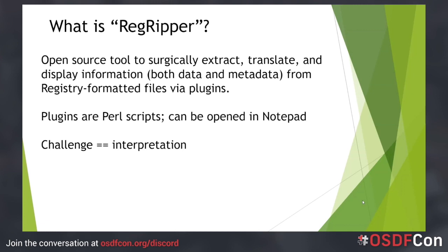The Windows registry contains a great deal of information that can significantly impact an investigation. For example, the registry contains keys and values that dictate system behavior, determine whether various Windows event logs are enabled, determine what a user sees on their desktop and what tools they can access, and track user activities. The registry can also provide information regarding insider threat or illicit image cases, and can even help determine the difference between production and possession of those images. It can also identify which applications last accessed the webcam or the system microphone.